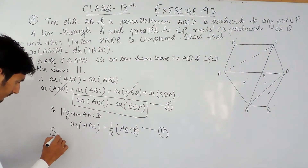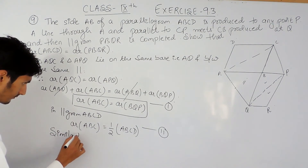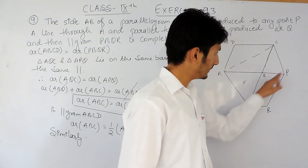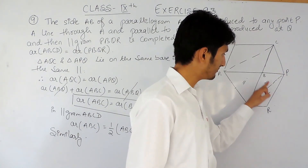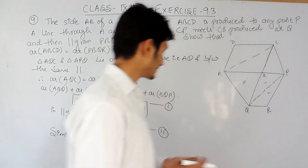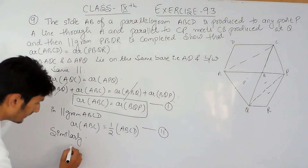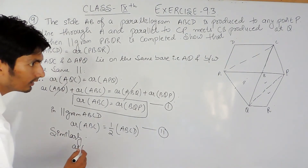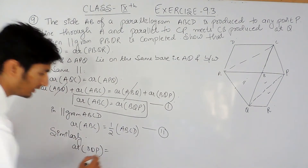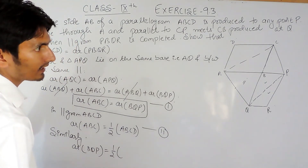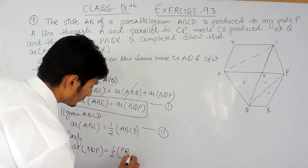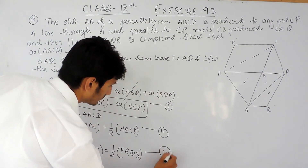Similarly, in parallelogram PRQB, diagonal BQ acts as a diagonal and must divide it into two equal parts. So area of triangle BQP equals half of the area of parallelogram PRQB. This is our third equation.